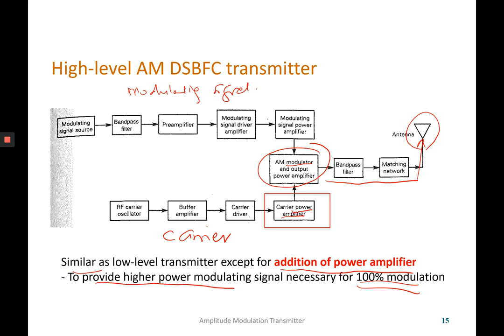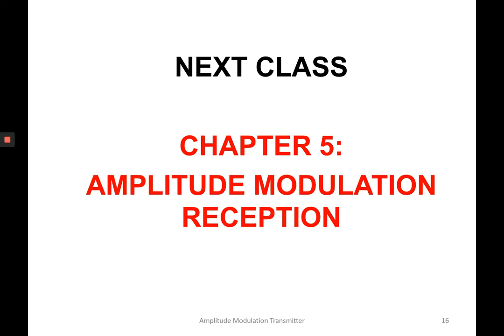That concludes Chapter 4. This was specifically about the double sideband full carrier AM transmitter. In the next video, you will learn about Chapter 5, which covers the reception system of the AM signal. Thank you for watching.